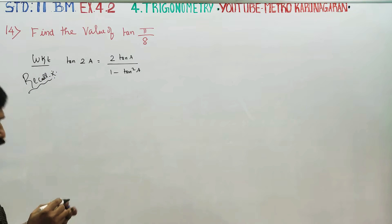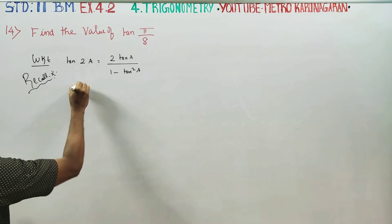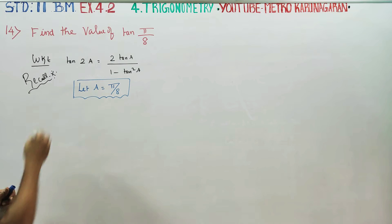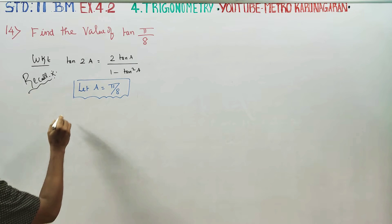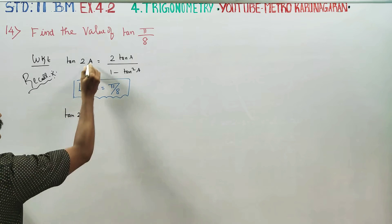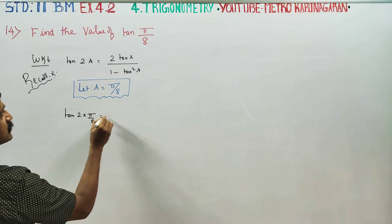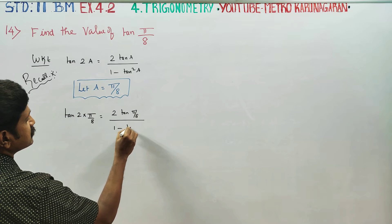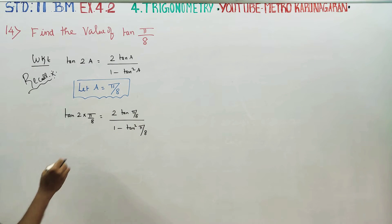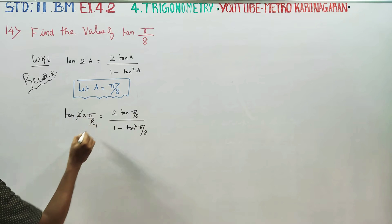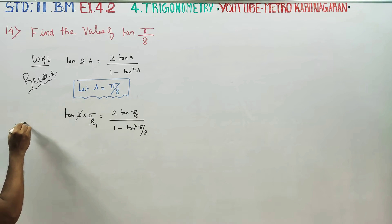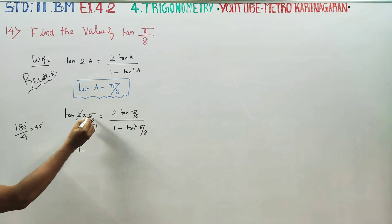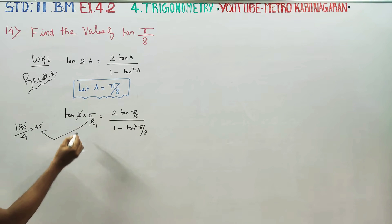In the formula, let a = π/8. Substituting, we get tan(2 × π/8) = 2·tan(π/8) / (1 - tan²(π/8)). The left side becomes tan(π/4). Since π/4 = 45°, and tan(45°) = 1, so tan(π/4) = 1.